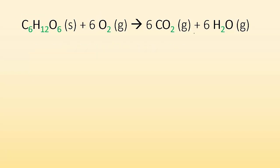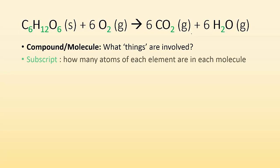The subscript is how many atoms of each element are in a molecule. So if I have a molecule of sugar, I have six carbons, twelve hydrogens, and six oxygen atoms in each molecule. In a molecule of oxygen, there are two oxygen atoms. CO2 has one carbon and two oxygens. In H2O there are two hydrogens and just one oxygen.